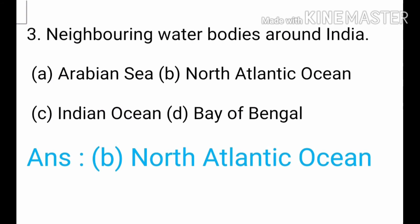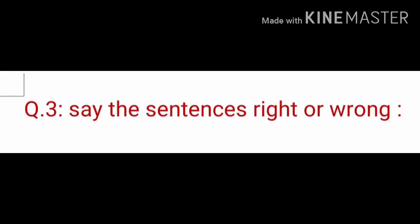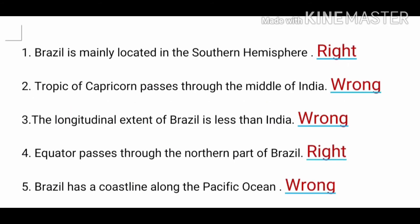Answer: North Atlantic Ocean. As you all know, Arabian Sea lies on the western side of India, Indian Ocean lies on the southern side, Bay of Bengal lies on the eastern side, and the North Atlantic Ocean lies on the eastern side of Brazil.